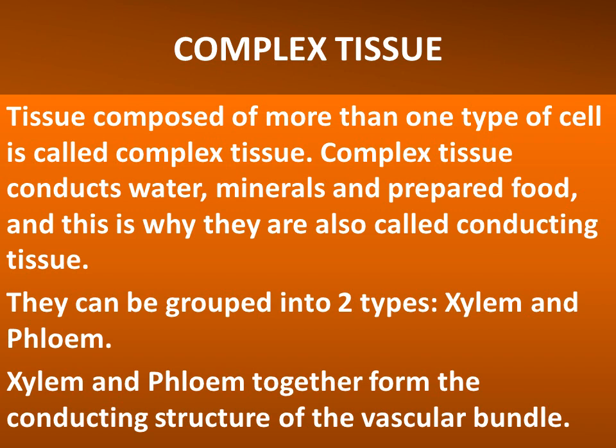Complex tissue: tissue composed of more than one type of cell is called complex tissue. Complex tissue conducts water, minerals and prepared food, and this is why they are also called conducting tissue. They can be grouped into two types: xylem and phloem.